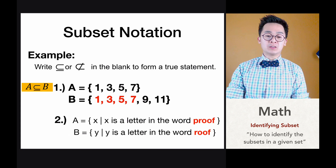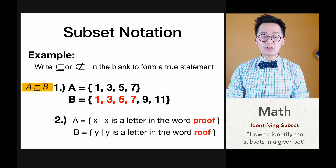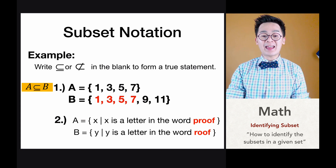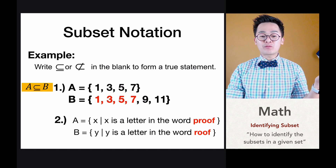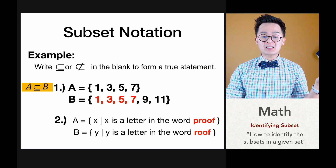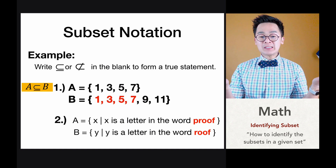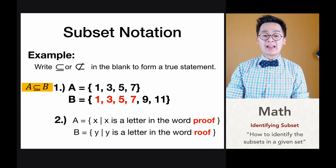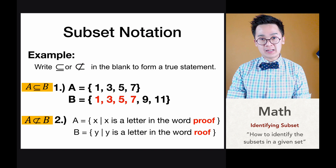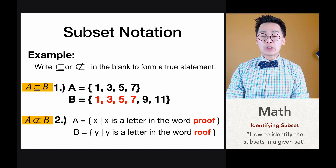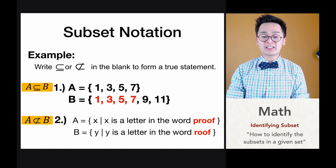For the second example, let's say we have set A which is x such that x is a letter in the word 'proof'. In this word we have P, R, O, F. And for set B, which is y such that y is a letter in the word 'roof', we only have R, O, F. So in this particular case, set A is not a subset of set B because there is no letter P in set B.